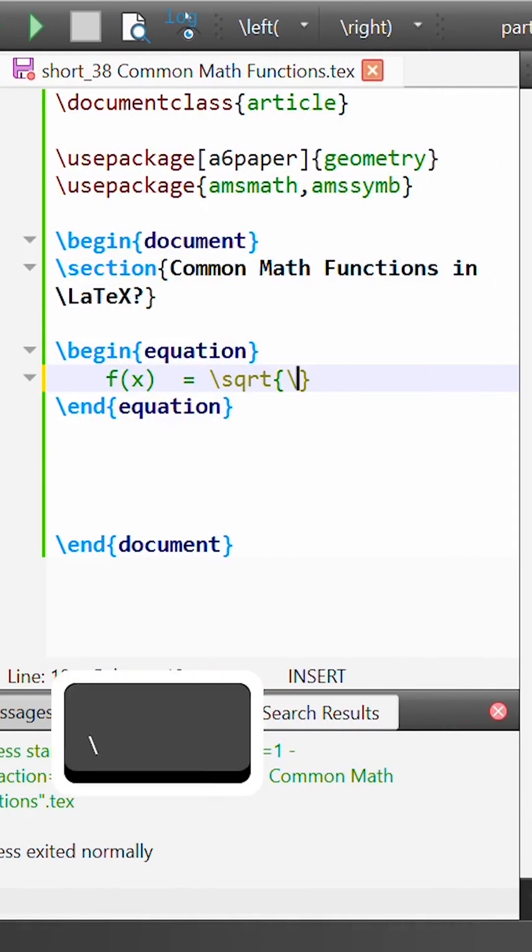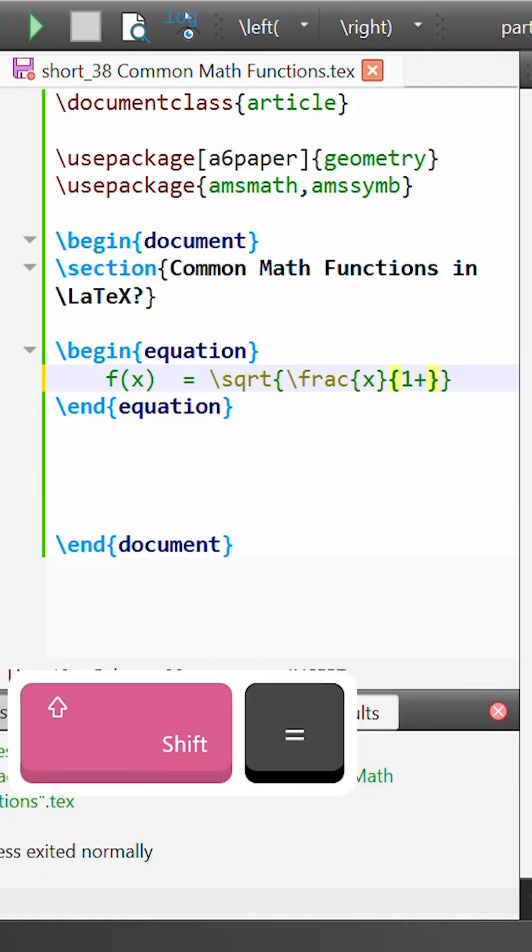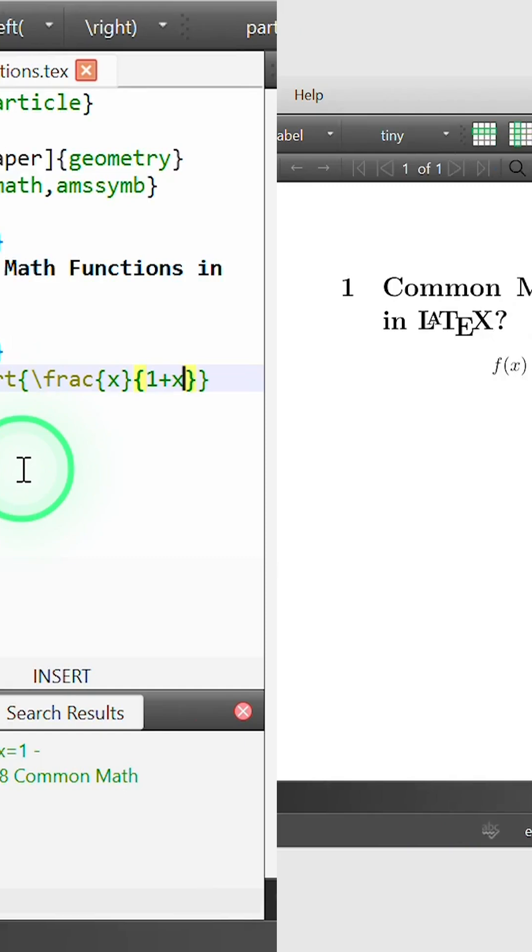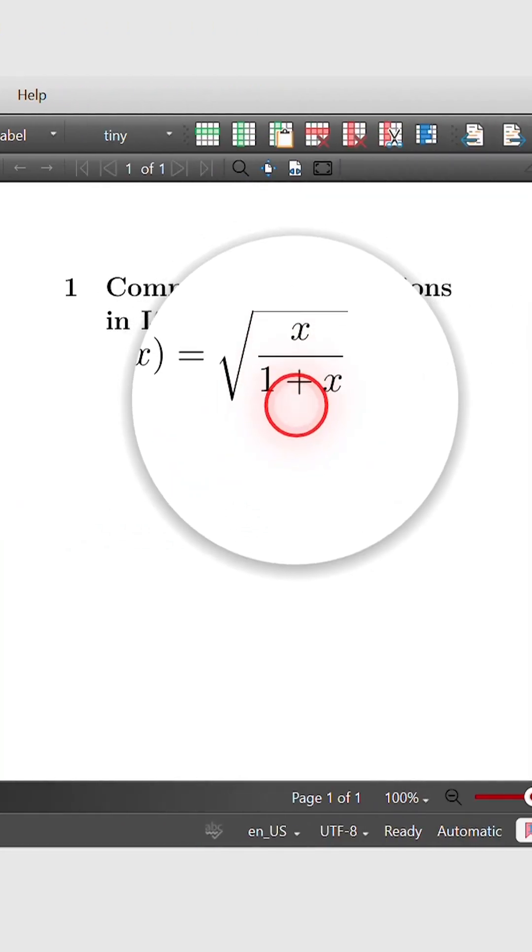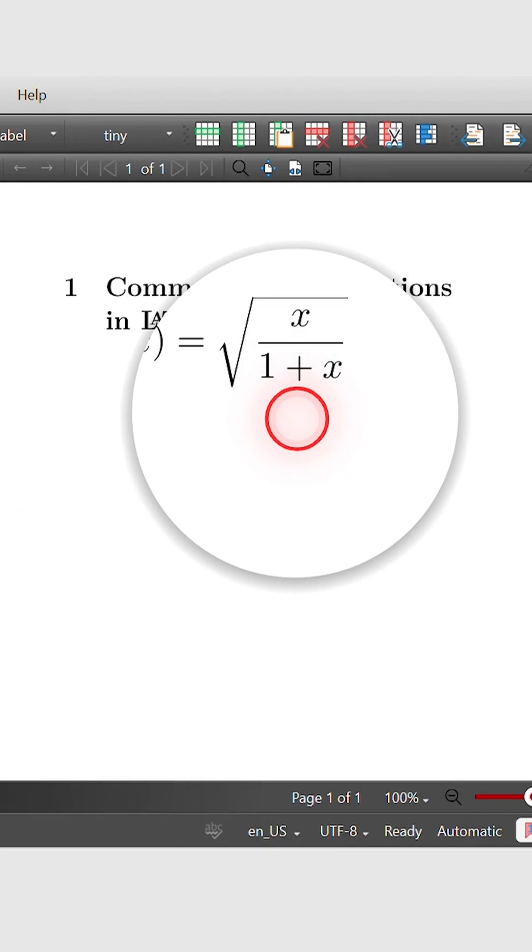If I write a different expression here such as a fraction, x over 1 plus x, and rebuild our output, you'll notice that LaTeX will adjust the size of this square root so that it fits the expression.